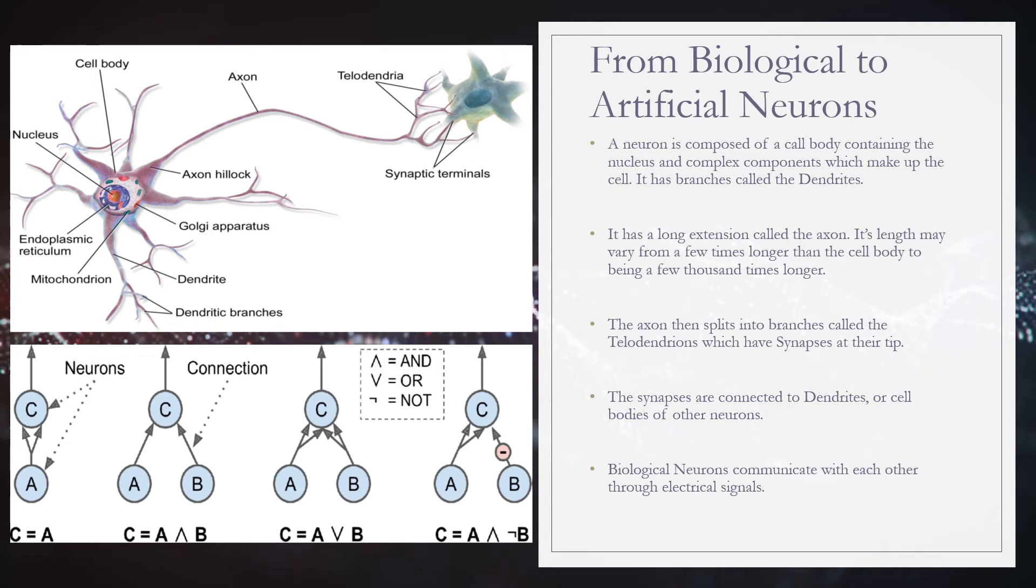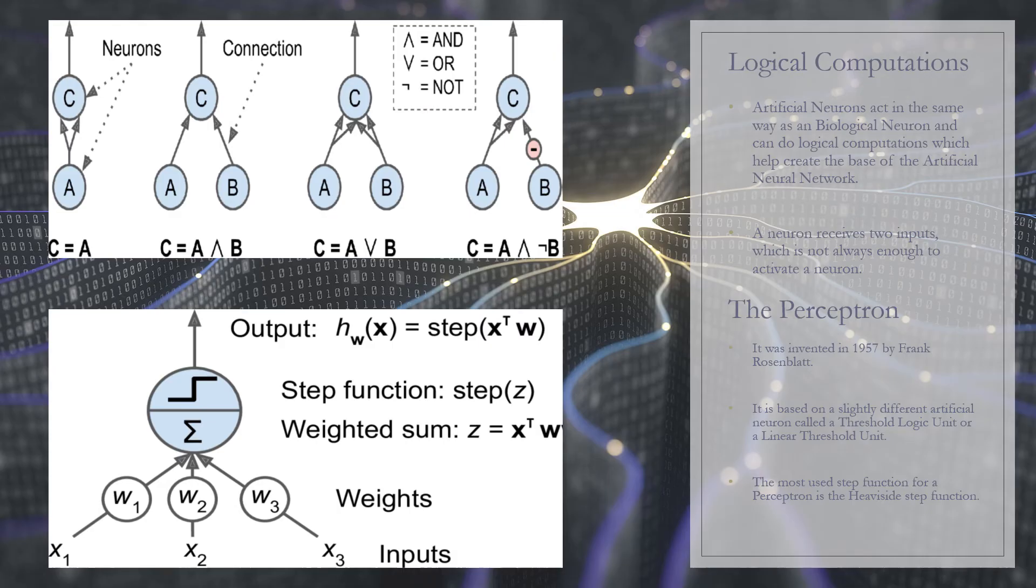Biological neurons produce short electrical impulses which are interpreted as signals, which travel along the axons and make the synapses release chemical signals called neurotransmitters. When a neuron receives a sufficient amount of these neurotransmitters within a few milliseconds, it fires its own electrical impulse.